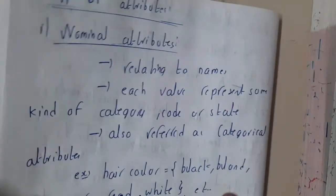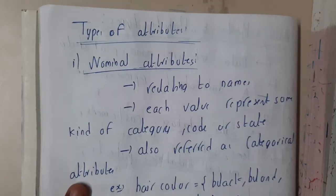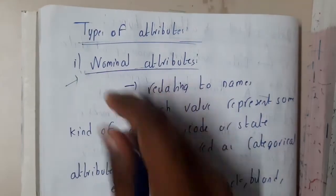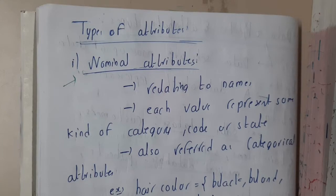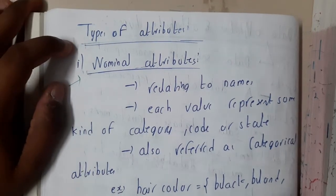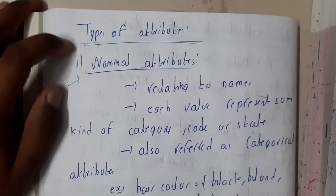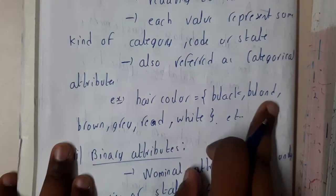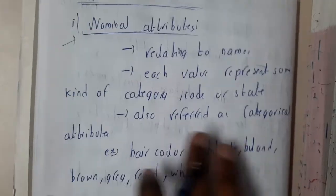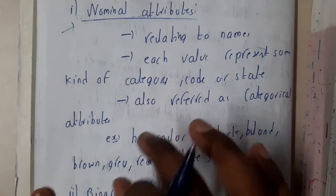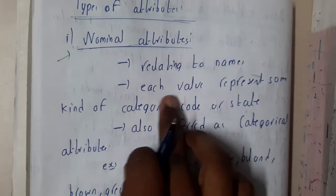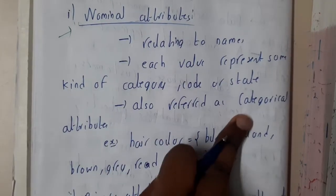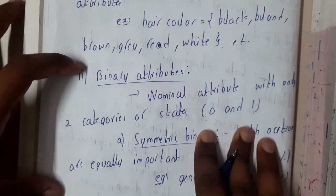Now let us go through the types of attributes. The first type is the nominal attribute. In simple words, nominal attributes are nothing but names. For example, colors: black, brown, white, gray, red, blonde — multiple colors in the form of text are called nominal attributes. They relate to names where each value represents some kind of category, code, or state. They are also referred to as categorical attributes.